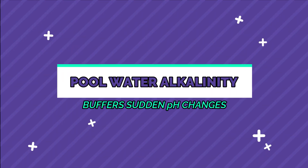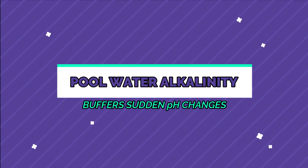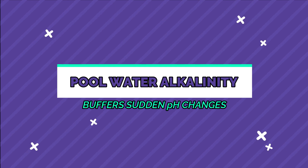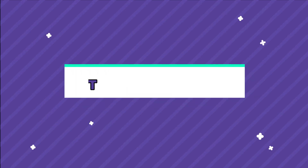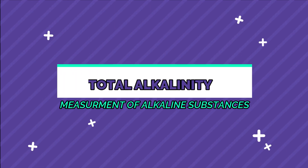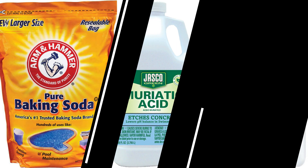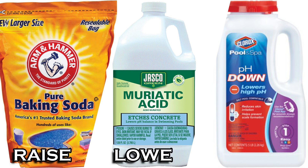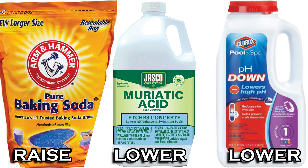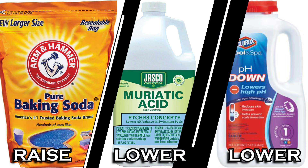Now, if the pH gets too low, it's too acidic and can corrode your pool equipment, causing etching on the surface. For alkalinity — alkalinity in pools is extremely important as it helps prevent sudden pH changes. Total alkalinity is the measurement of alkaline substances and should be maintained between 80 to 120 parts per million. We can use regular baking soda to raise it and muriatic or dry acid to lower it.